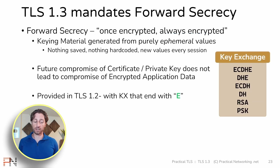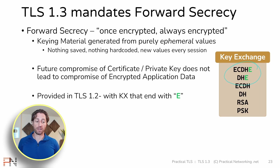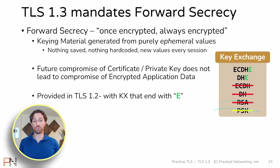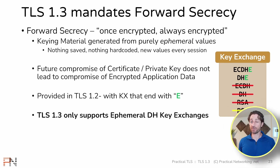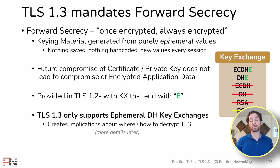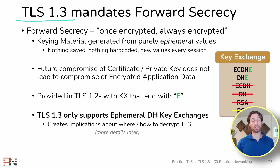In TLS 1.2 and prior, forward secrecy was provided with any key exchange protocol that ended with an 'e.' TLS 1.3 gets rid of insecure protocols, and all the protocols removed from the list lacked that 'e.' The only remaining key exchange protocols both include that 'e,' and therefore all key exchanges in TLS 1.3 provide forward secrecy. This does create some implications for decrypting TLS traffic for compliance or security purposes, but there will be a dedicated lesson on that later. Every TLS 1.3 session providing forward secrecy is a big win for security.